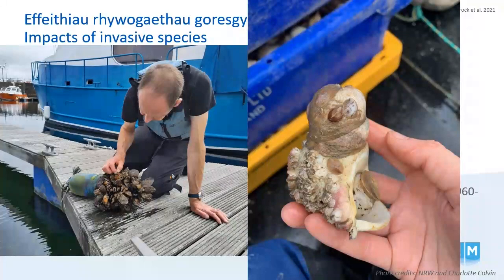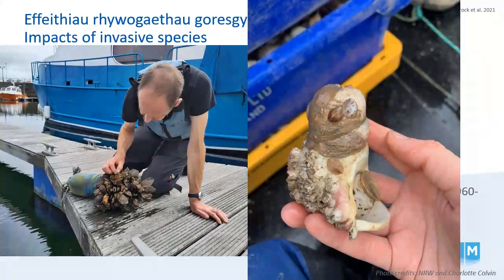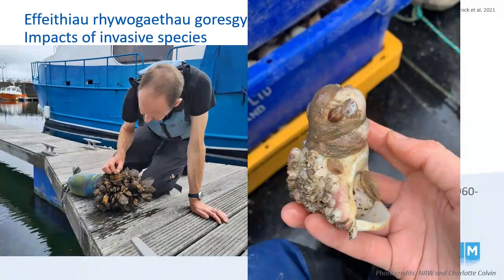These two photos illustrate some of the economic and social impacts of INNS. On the left, the photo shows a boat that has been heavily fouled in a marina. The costs of cleaning and maintaining equipment can be burdensome. On the right, the photo shows a whelk that was picked up on a commercial whelk boat that is hosting a stack of American slipper limpets. Removing the limpets can be time consuming and could result in the whelk becoming damaged, thereby reducing its sale value and impacting the fishers.